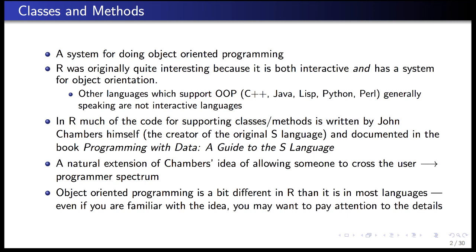In R, much of the code for writing classes and methods was written by John Chambers himself, who is the creator of the original S language. Much of the theory and design of the system is documented in the book 'Programming with Data: A Guide to the S Language,' also sometimes referred to as the green book. John Chambers is still working heavily on developing the classes and methods system in R, so new things are frequently appearing in the language.